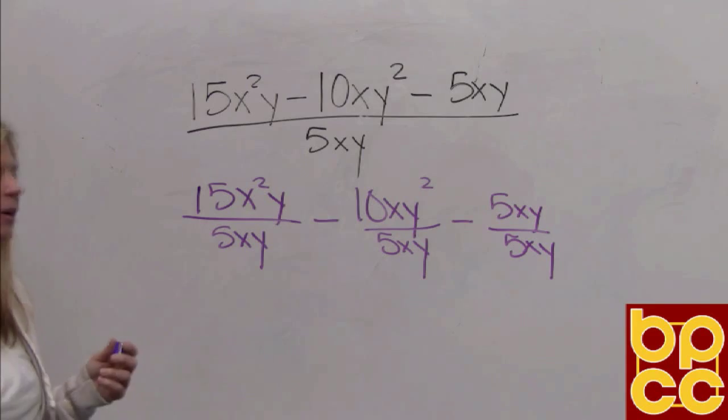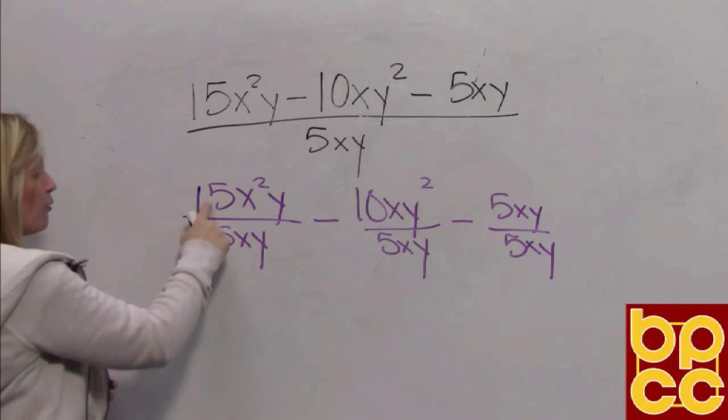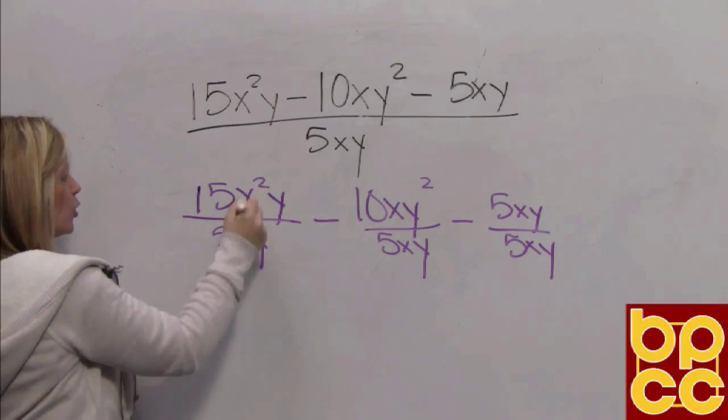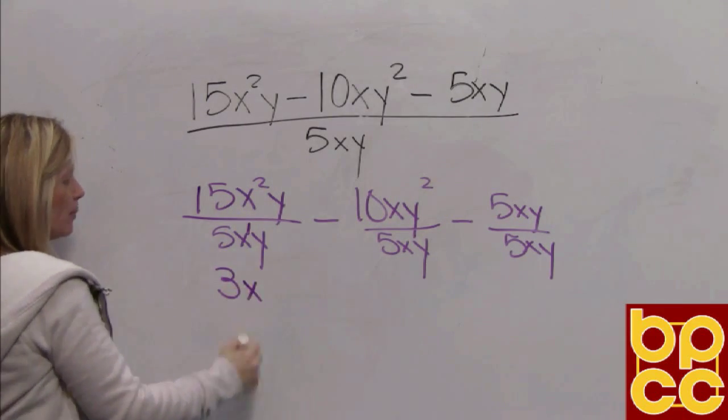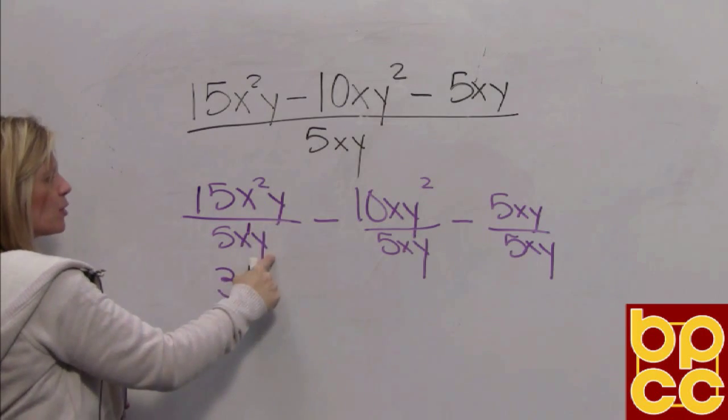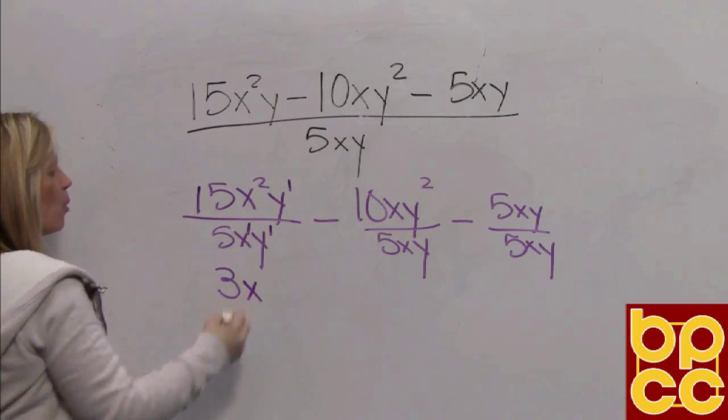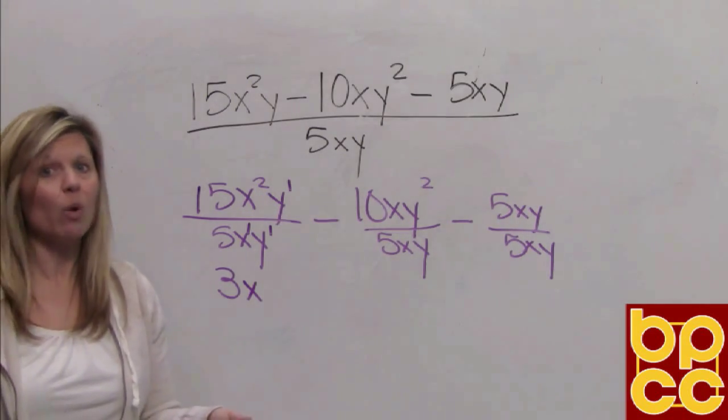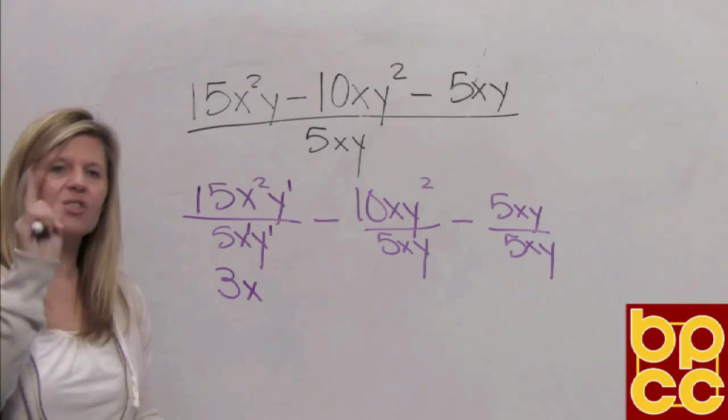Okay, now we're back to what we did the previous day. We divide the coefficients, we get three. We divide variables, we subtract exponents. Two take away one is one. We divide these variables. That's y to the first divided by y to the first which would be y to the zero. But we've already discussed that, we don't ever write y to the zero. Y to the zero is the number one.